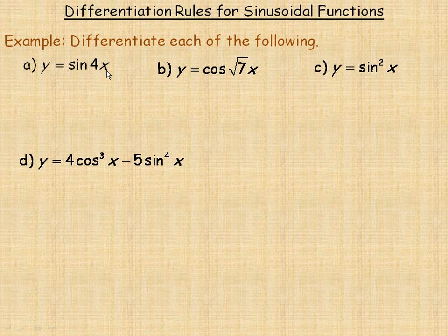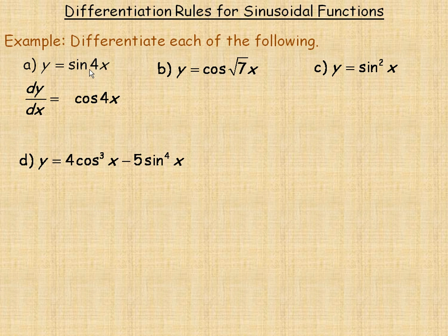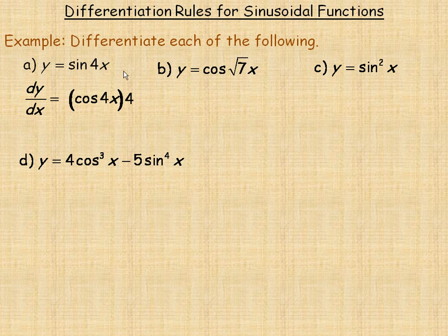First we're differentiating sin(4x). The derivative of sin is cos, so the derivative of sin(4x) should be cos(4x). We're actually using chain rule here because it's not just sin(x), it's sin(4x). You can think of the 4x as the inside function and sin as the outside function, because if I'm evaluating this I would go 4 times x and then take the sin — that's why 4x is the inside function. For chain rule, once we differentiate the outer function, we multiply it by the derivative of 4x, which is just 4.